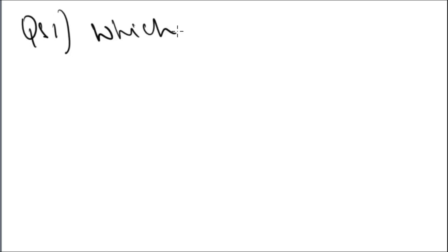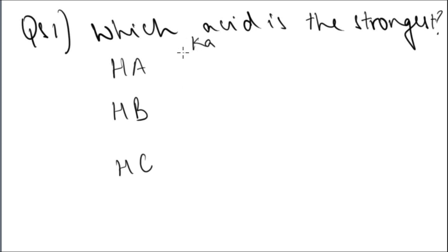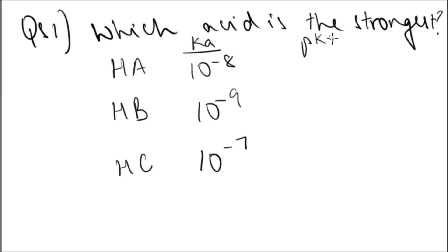Now we'll move on to the homework. The first question is: which of the following acids is the strongest? You're given values of Ka and pKa for three different acids — HA, HB, and HC — and you have to determine which one is the strongest.